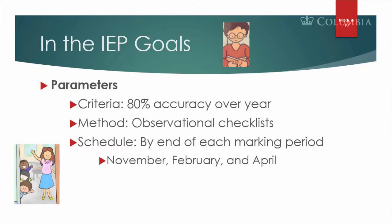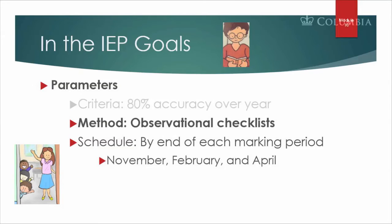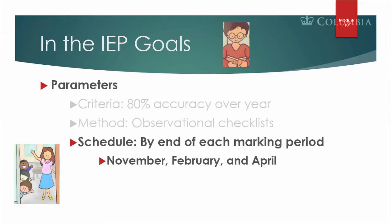We want 80% accuracy, and the method will be an observational checklist by the end of each marking period — November, February, and April. Those are the IEP goals that will give him what he needs in terms of developing his speech skills so he is much more intelligible.